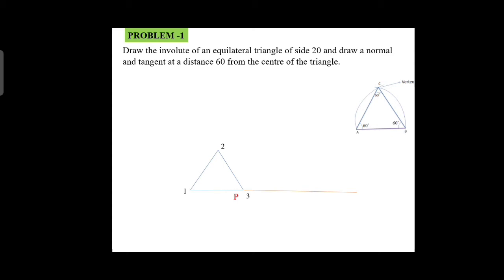Then you divide the straight line into equally 3 parts. P to 1 dash distance is 20, next 2 dash is another 20, and finally you will get 3 dash. Then draw the extension line from point 1, point 2, and point 3.